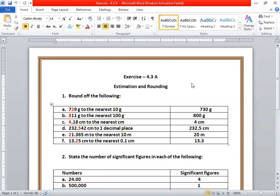In the first part, you have 729 grams to the nearest 10 grams. I have marked the 10 gram digit with red color so you can understand easily. You have to change this 2, and the digit beside 2 is 9, which is greater than 5, so we add 1 to the 2. The answer is 730 grams.